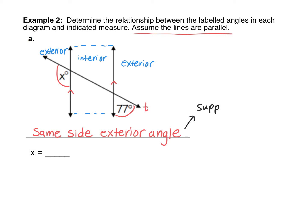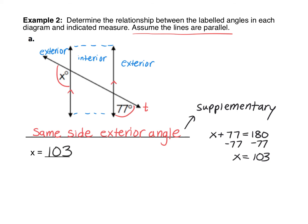To solve for X, we use the relationship that the two angles add to 180 degrees. We could set up the equation X plus 77 equals 180, or just take 180 minus 77. If we subtract 77 from both sides, we arrive at X equals 103. You could also just do 180 minus 77 on your calculator without writing an equation and arrive at X equal to 103.